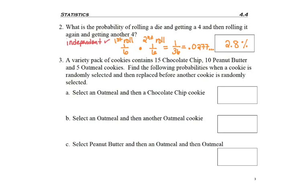Okay, now let's move on to question three. I have this variety pack of cookies, and it breaks down to the different types. Find the following probabilities when a cookie is randomly selected and then replaced before another cookie is selected. Because the first cookie is put back in the jar, we have independent events, so we can go ahead and use our multiplication rule.